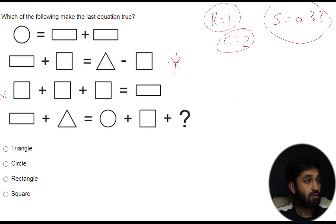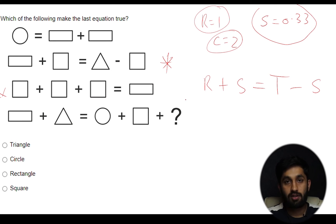So rectangle plus a square equals a triangle minus a square. So let's substitute in our numbers that we have. Rectangle equals one, square equals 0.33 equals triangle which we don't know yet, minus square which is 0.33.